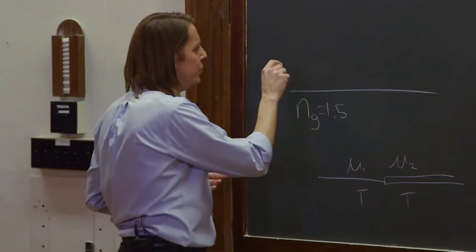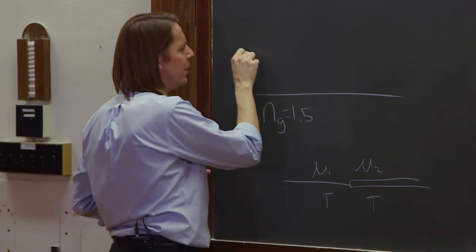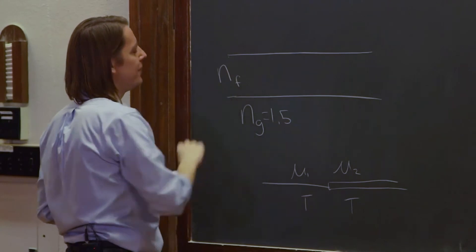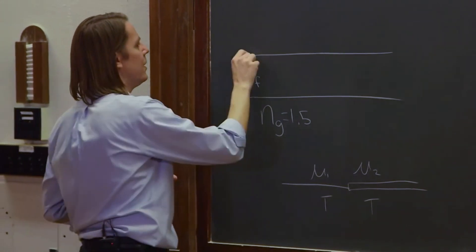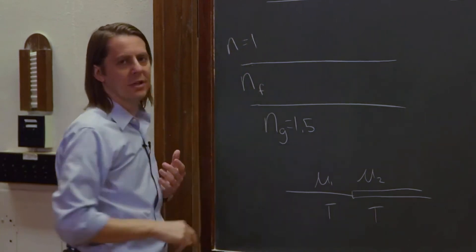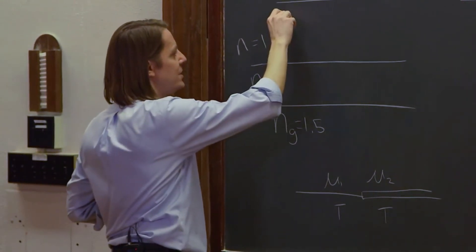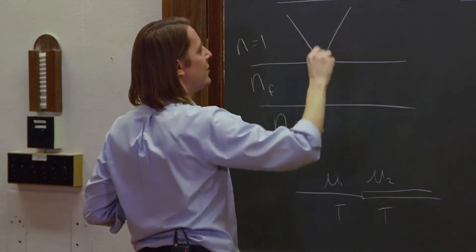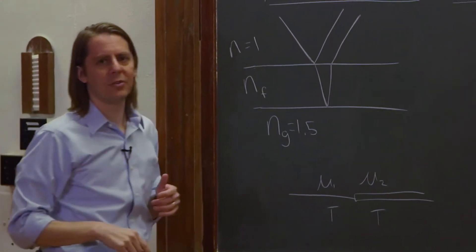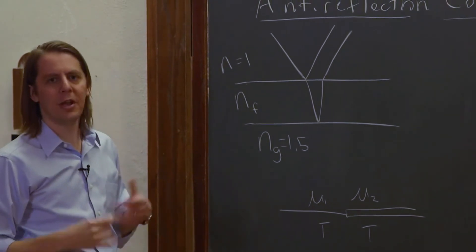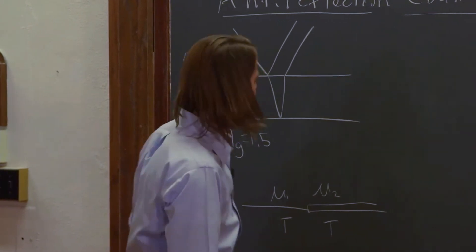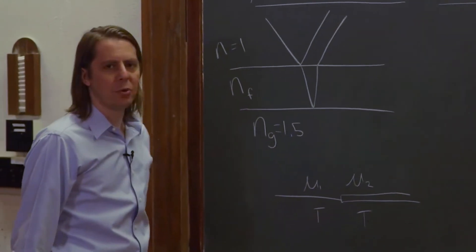So what we can try to do is put another film on top that has n, I'll call it f, index of the film. It's an unknown index. And then finally, we have n equals 1 out here in air. And we can see if we can achieve the condition that what reflects here will cancel, be canceled by what reflects there. And in that case, if they cancel, we can call it an anti-reflection coating. We have reduced the reflections from 4% to something much smaller. So let's work out the math.